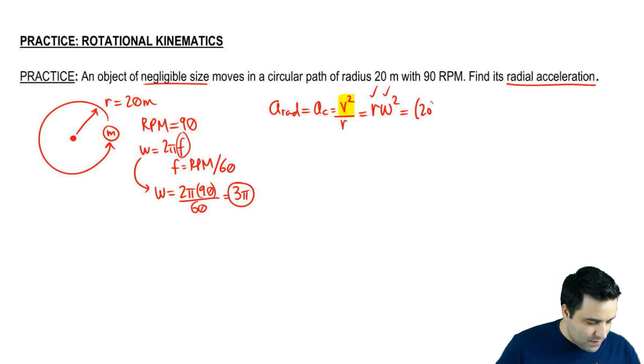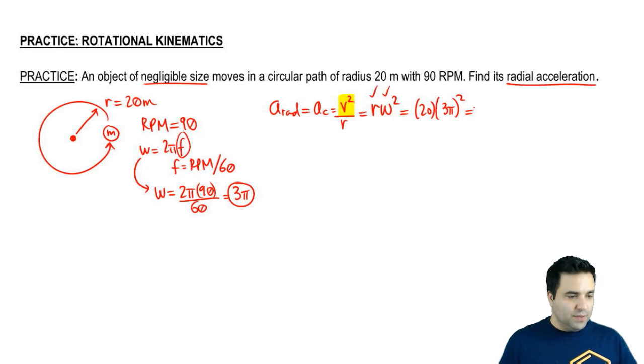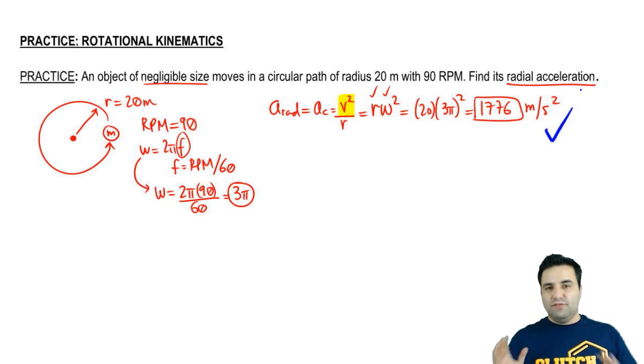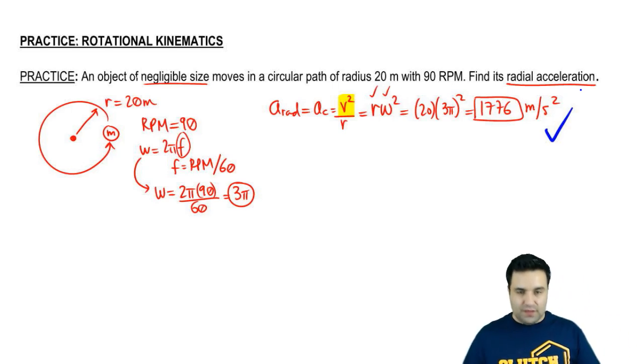So r is 20. And then this is 3 pi squared. So once you plug all this in the calculator, you get 1776 meters per second squared. That's it for this one. Very straightforward question. Let me know if you have anything.